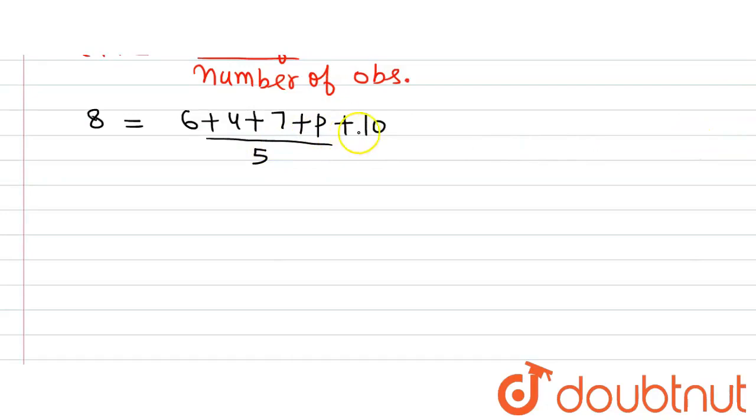Now, let's solve it. So, we will have 10 plus 7, 17 plus 4, 21 plus 6, 27 plus p is equal to, 5 will get multiplied by 8 when we go to the other side of the equation and we will have 40. Now, let's solve it.